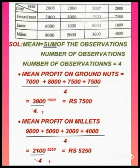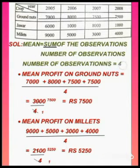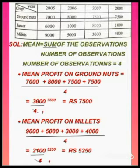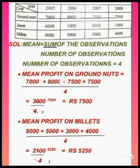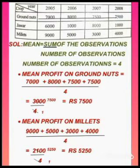Here the number of observations will be equal to four because they have given four years: 2005, 2006, 2007 and 2008. So the average or mean profit on groundnuts is equal to the sum of the observations — 7000, 8000, 7500 and 7500 — by the number of observations, which is 4.